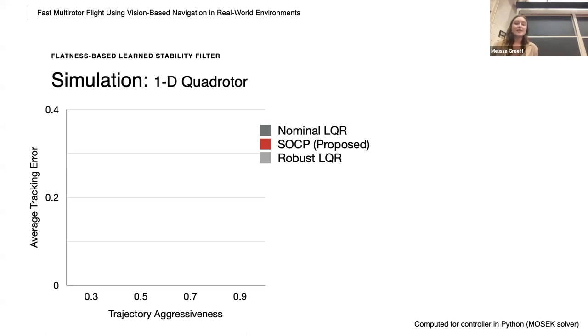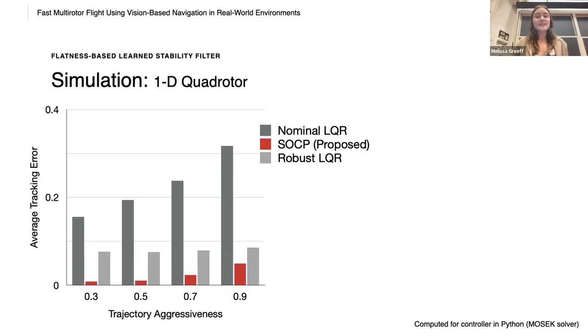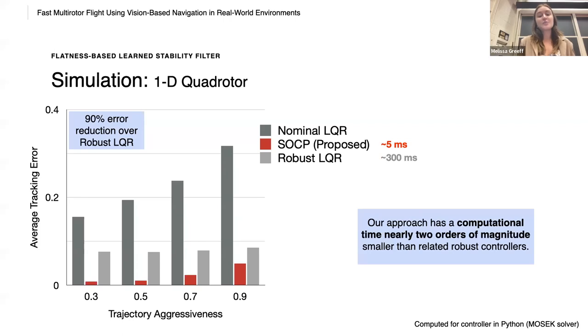So we compare the average tracking error on increasingly aggressive trajectories. We compare a nominal linear controller, LQR, our proposed filter, SOCP, and a robust linear controller, LQR. We see around a 90% error reduction over the robust LQR. But significantly, our filter takes around five milliseconds to compute, compared to around 300 milliseconds for the robust LQR. So our approach has a computational time nearly two orders of magnitude smaller than robust controllers.